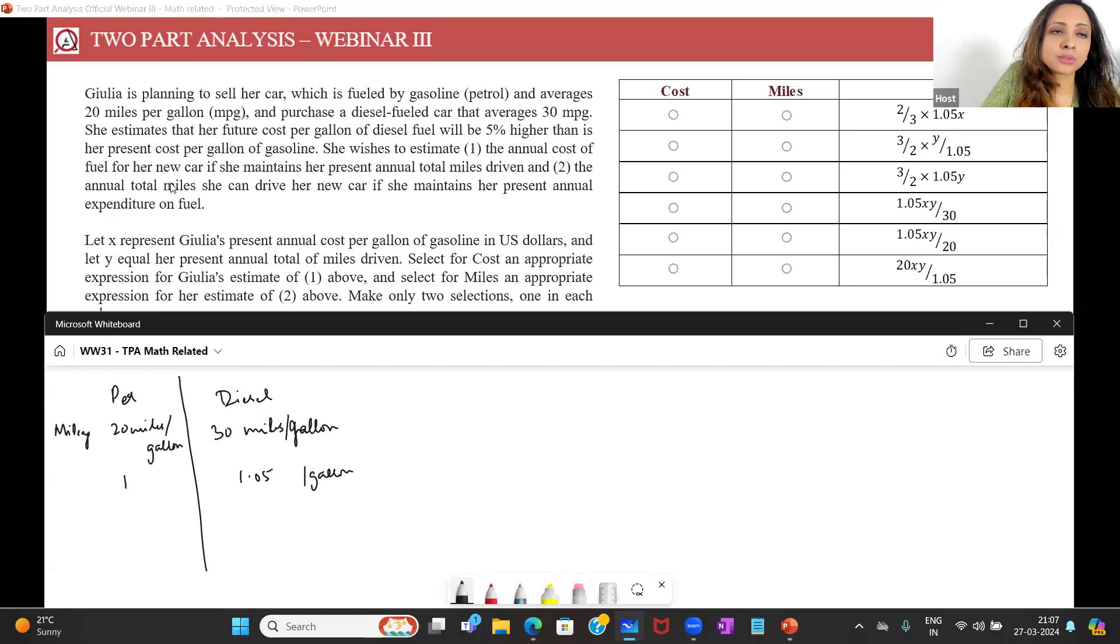She wishes to estimate the annual cost fuel. Let me look at what other information I have. Let x represent Julia's present annual cost per gallon of gasoline in x dollars. So I'm given that this cost per gallon is x over here. So I have this as dollar x per gallon, and so I know here then this has to be 1.05x, dollar 1.05x per gallon.